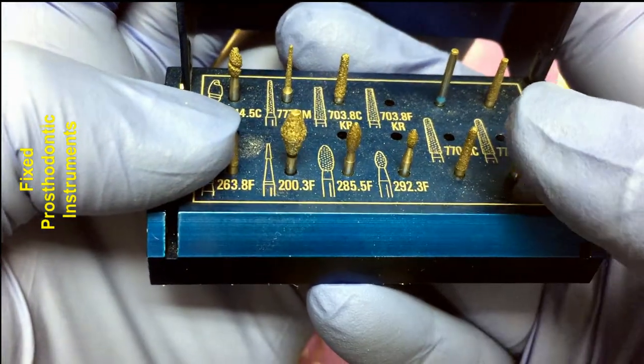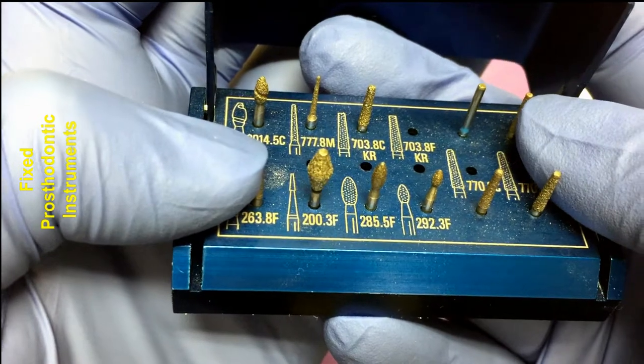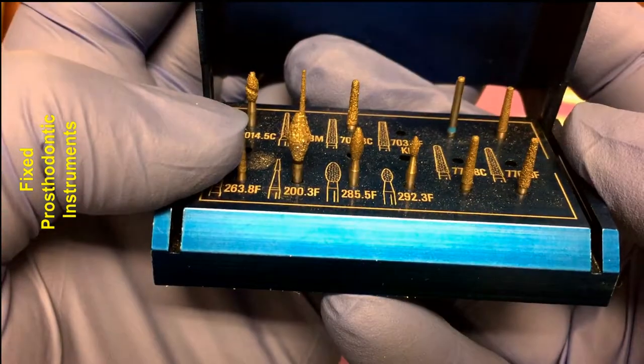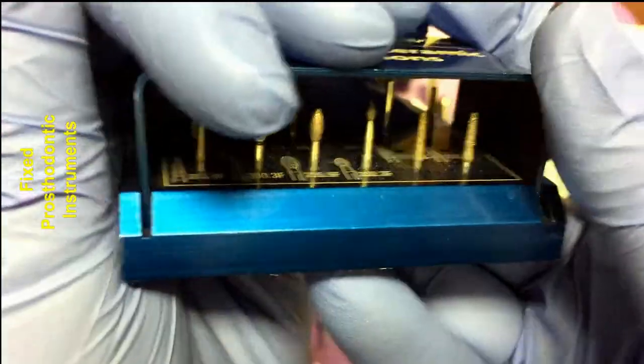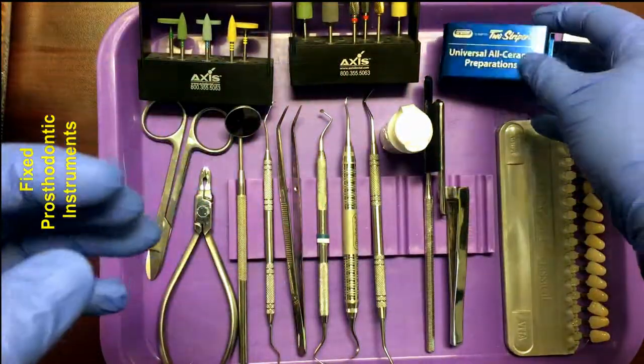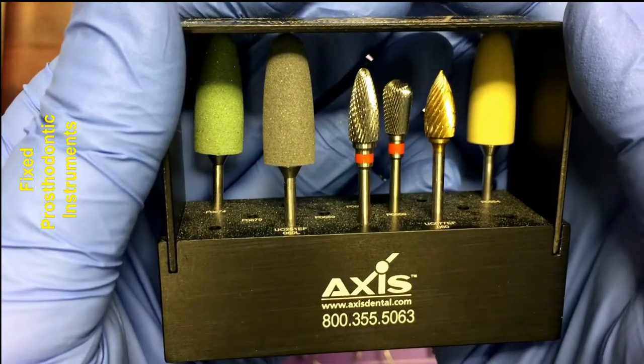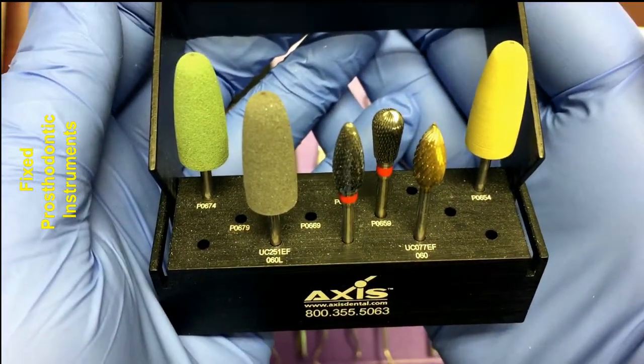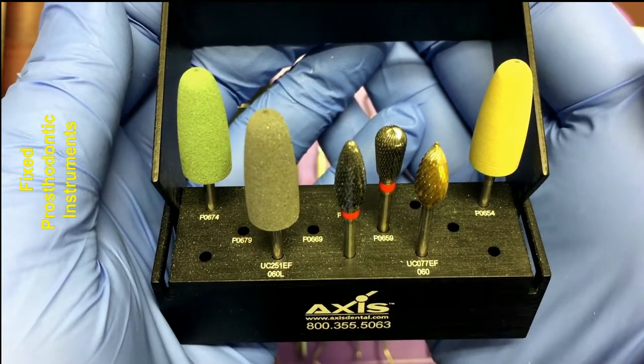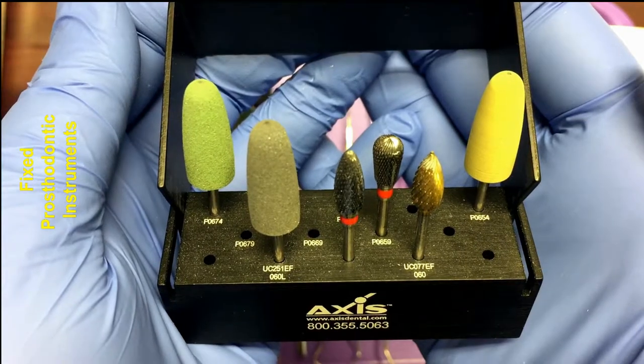Next, we have acrylic burrs. Acrylic burrs are used to trim and polish acrylic temporary restorations. If you're making a traditional crown or bridge for a patient where the final restoration is fabricated in a laboratory, the patient will leave your office with a temporary restoration. In order to polish that or to shape it, you need to use burrs that are made specifically for working with acrylic material.